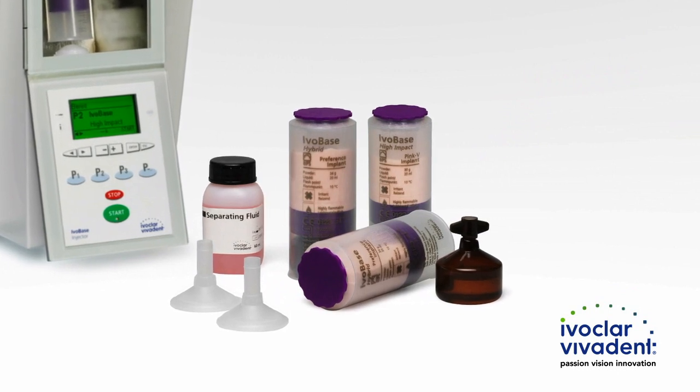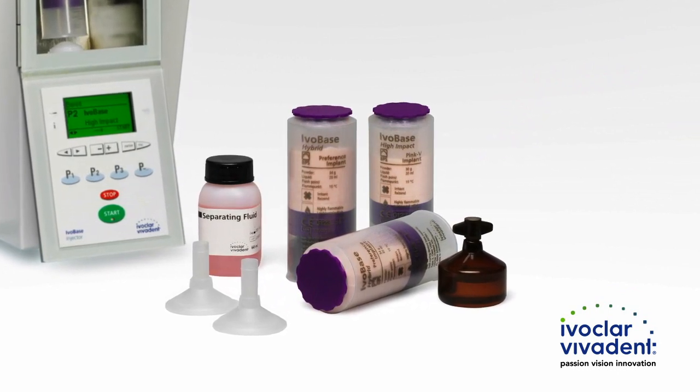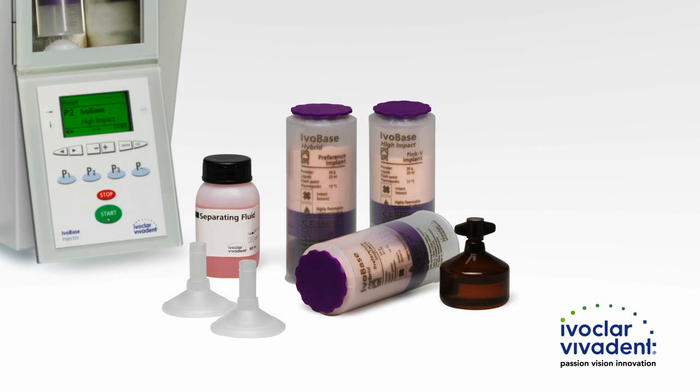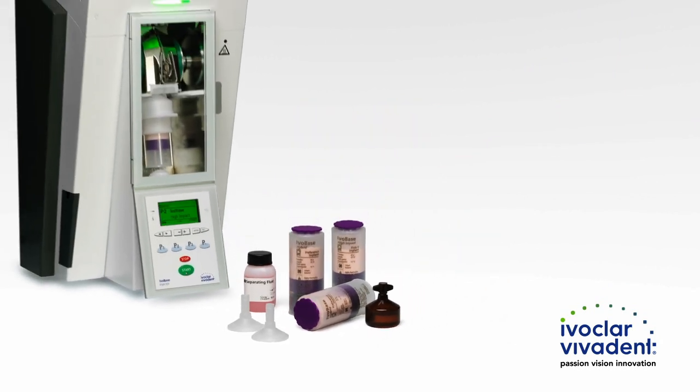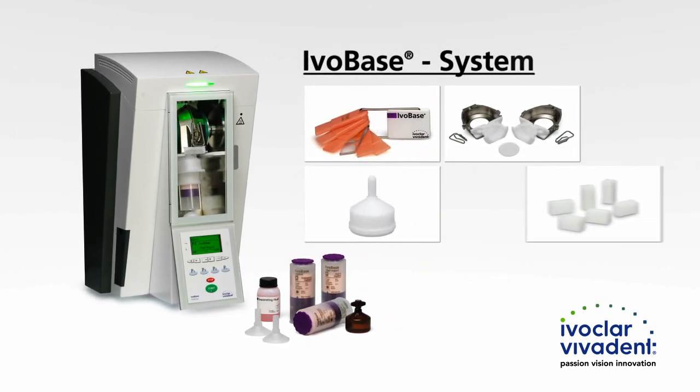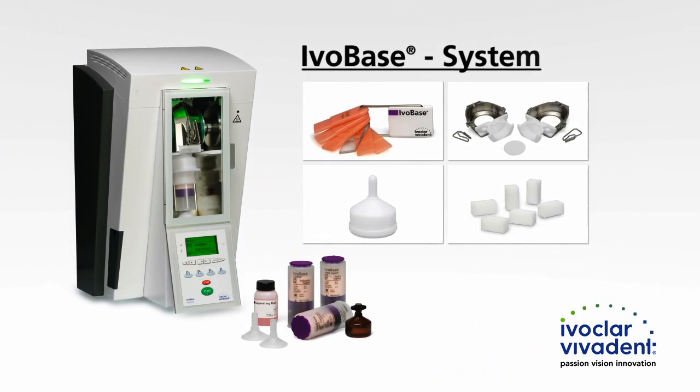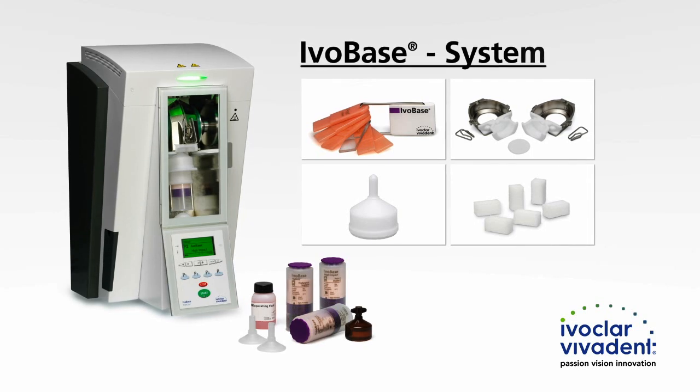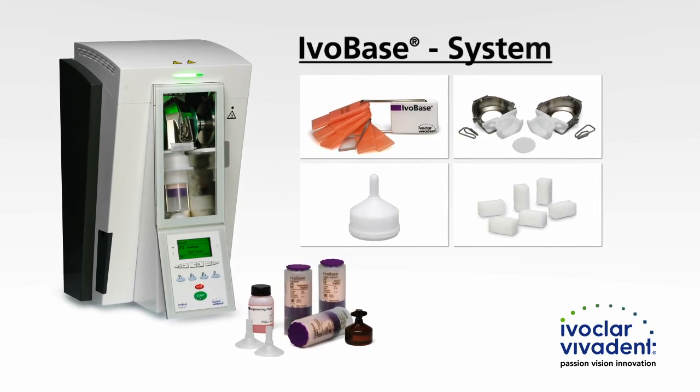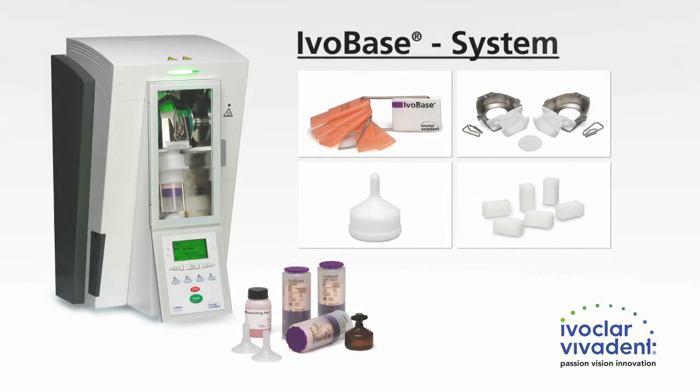The IvoBase material is available in two versions: IvoBase Hybrid and IvoBase High Impact. This instructional video introduces you to the use of the individual system components and points out special features. Please refer to the instructions for use for more detailed information.